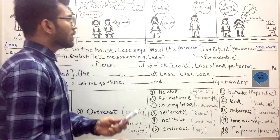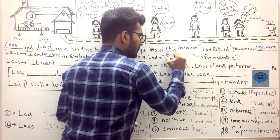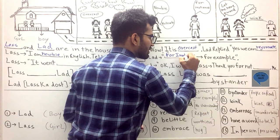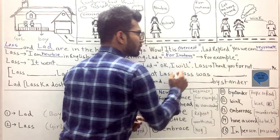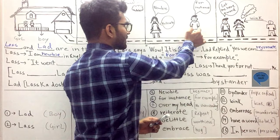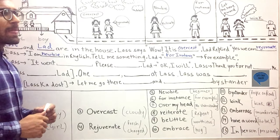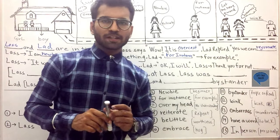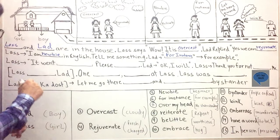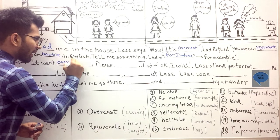So lad said why not, and lad explained her like rather than using for example, we can use for instance. We can use for instance. And when the lad explained for instance to the lass, what lass replied - lass said, brother, you have told me but what you have told me went over my head. I didn't understand it at all. It went over my head.